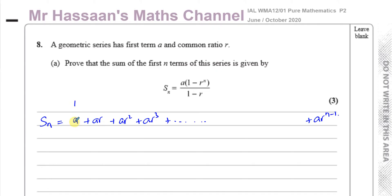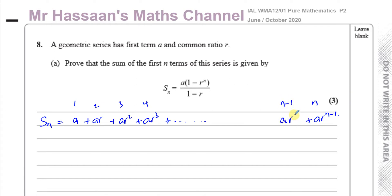The first term is A times R to the power of 0, the second term is AR¹, the third term is AR², and the fourth term is AR³. So the nth term is AR^(n-1). The term before the last term, which is the (n-1)th term, will be AR^(n-2).